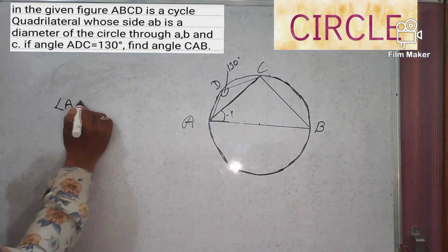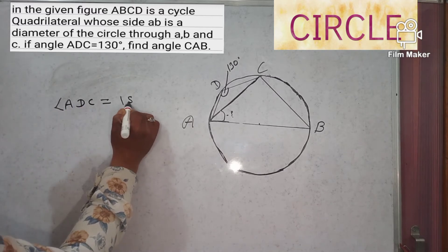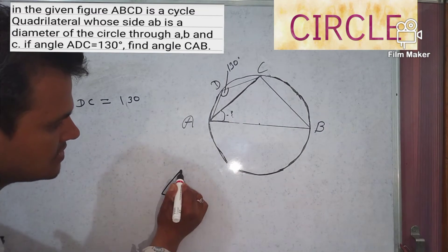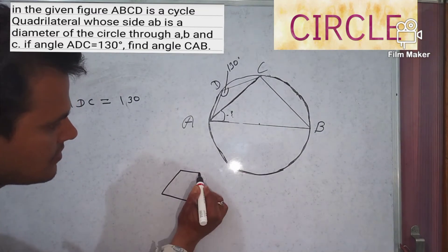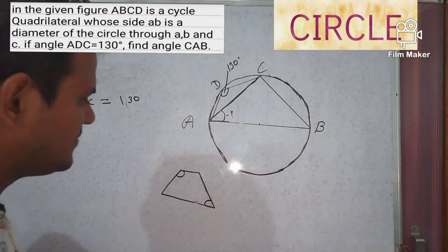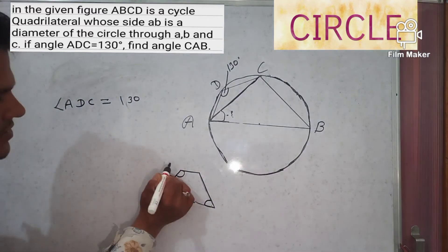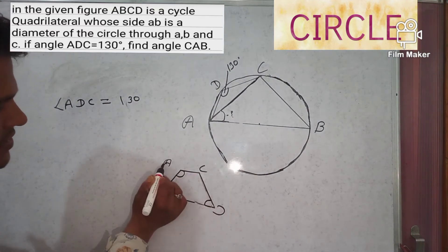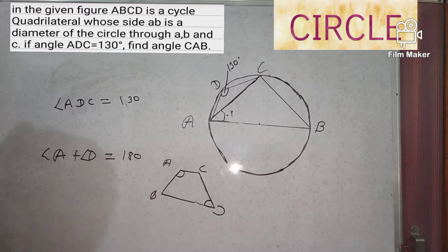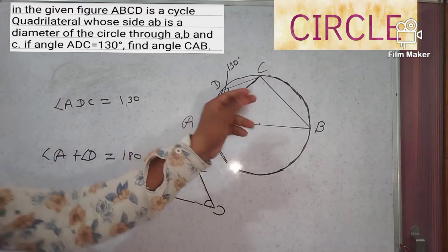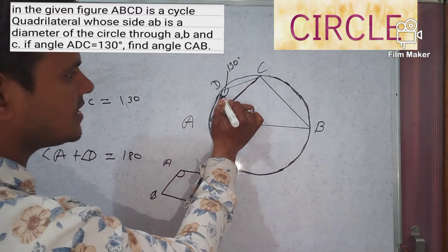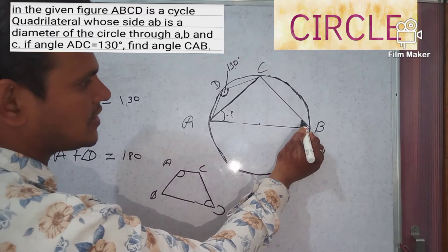So angle ADC is equal to 130 degrees. See here in this figure — this angle and this angle, if we add them, they will be 180 degrees. In a cyclic quadrilateral, angle A plus angle D (opposite angles) is equal to 180 degrees. So this angle ADCB — this angle is 130 degrees. So what will the opposite angle be?